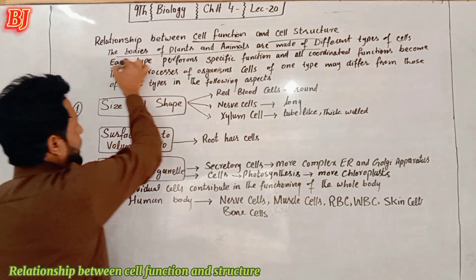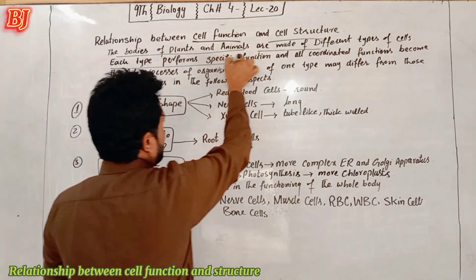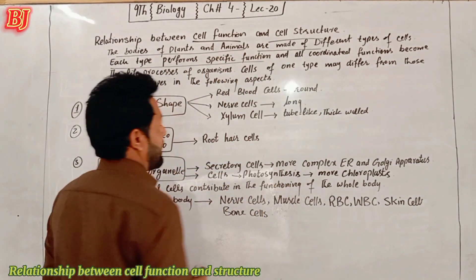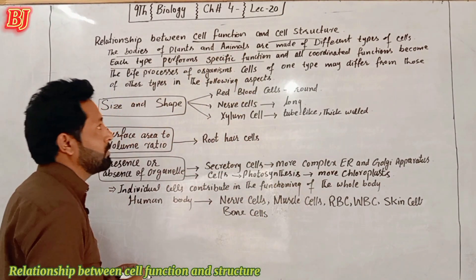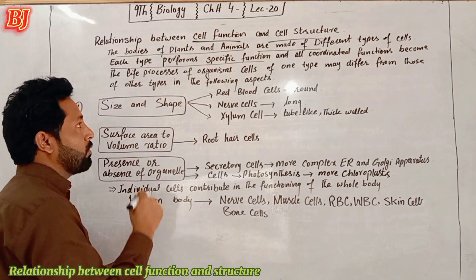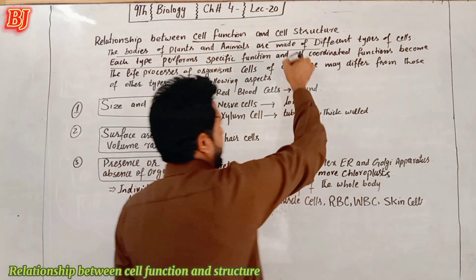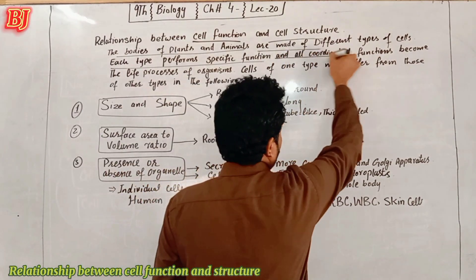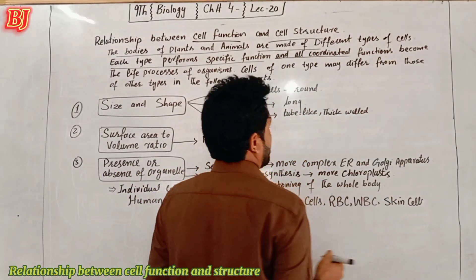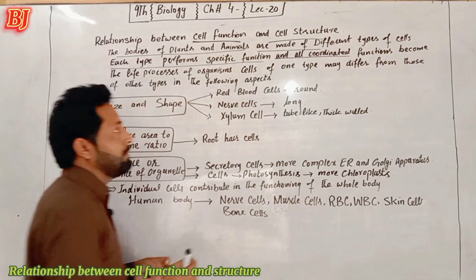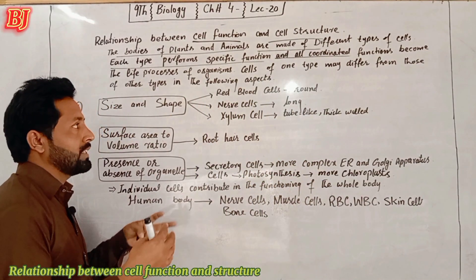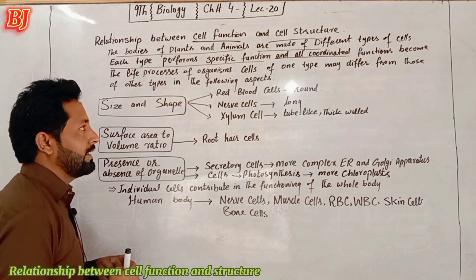Each cell performs a specific function, such as teaching and signaling. The muscles of our body can also be an example, and all correlated functions come together.